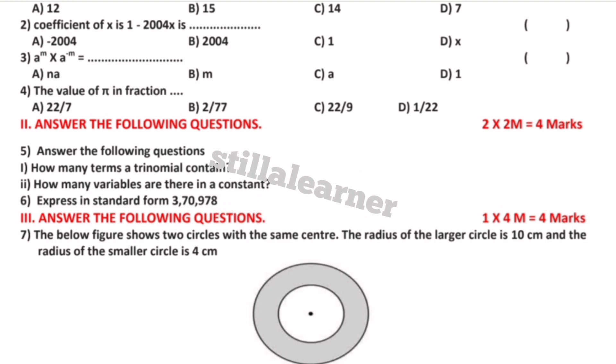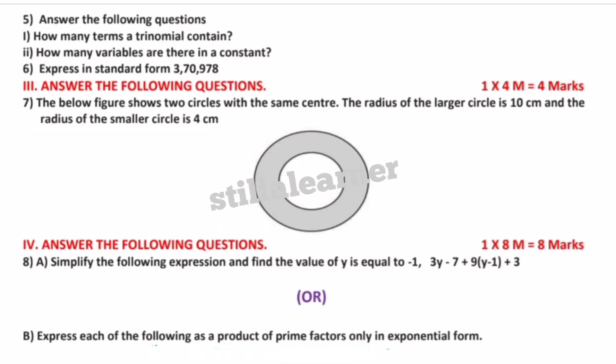After this, coming next to Roman numeral four. So this Roman numeral four, here you may have to see one choice question. Here A or B, you need to choose any one according to your wish, whatever seems to be easy. Just pick that one and start writing.